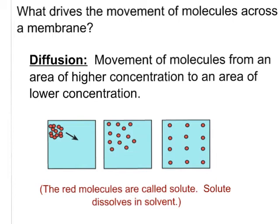What drives the movement of molecules across a membrane? We're going to talk about a really important idea in science called diffusion. Diffusion is the movement of molecules from an area of higher concentration to an area of lower concentration. Here's an example: we have little red molecules in a blue liquid — or it could even be a gas. This is a very high concentration right here, and we're watching diffusion happen as they move to areas of lower and lower concentration.